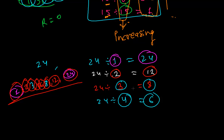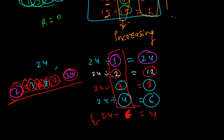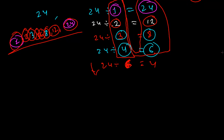You don't need to keep dividing further, because the results start repeating. For example, 24 divided by 6 gives 4, but 4 and 6 are already listed. Combine all the pairs you found going down, and those are all your factors.